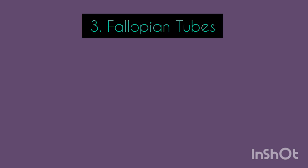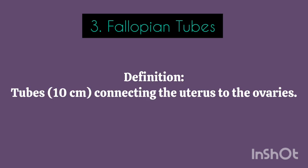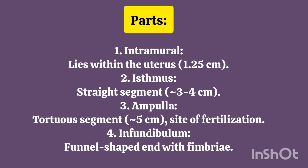Fallopian Tubes – Definition – Tubes 10 cm connecting the uterus to the ovaries. Parts: 1. Intramural – Lies within the uterus – 1.25 cm. 2. Isthmus – Straight Segment – 3–4 cm. 3. Ampulla – Tortuous Segment – 5 cm – Site of Fertilization.